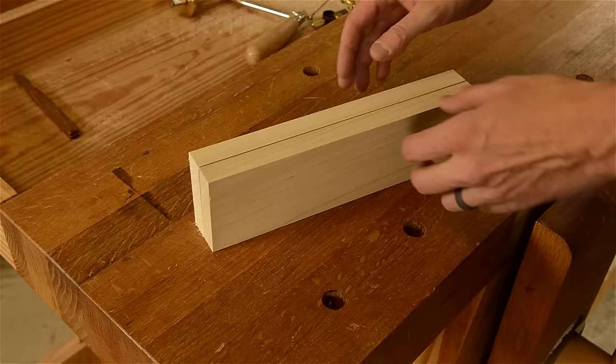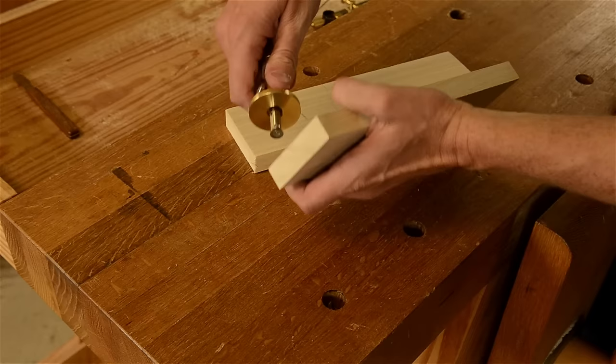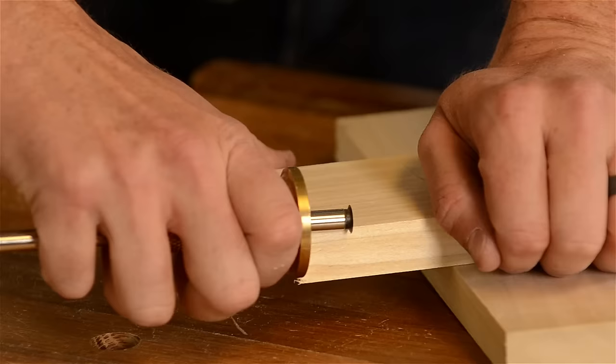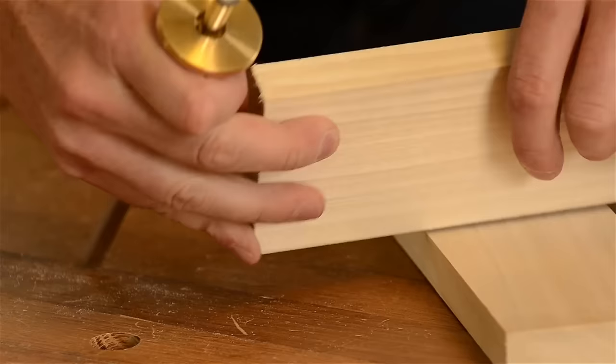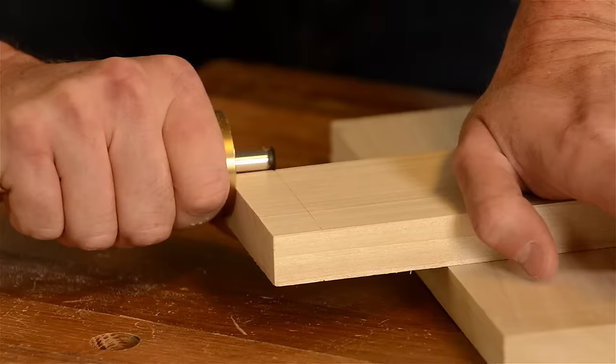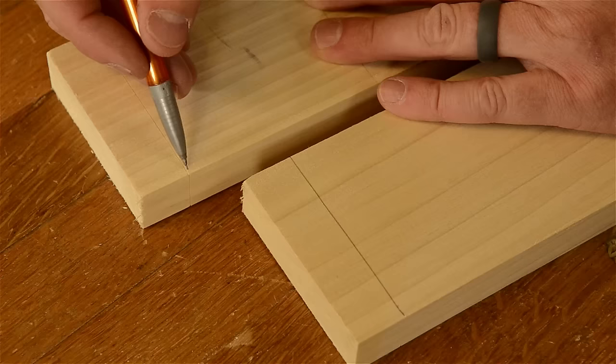The first thing I do when cutting dovetails by hand is to use a marking gauge to lay out a baseline. I set my marking gauge cutter to just barely hang over the edge of the board. I mark all ends of the boards. I also use a fine tipped pencil to darken my cutting gauge lines so I can see them better.